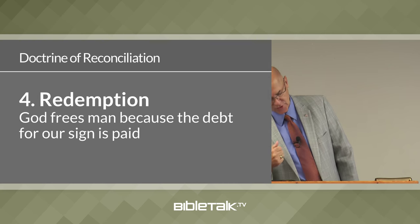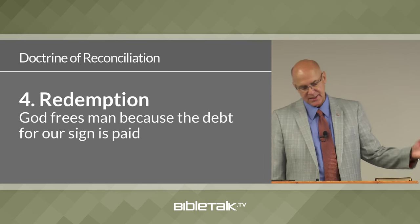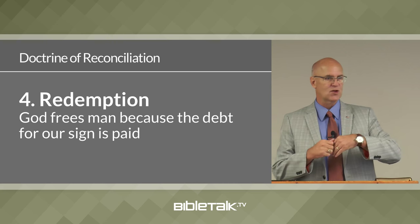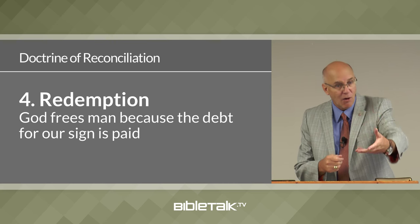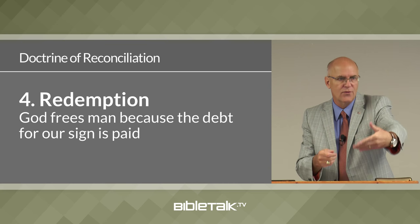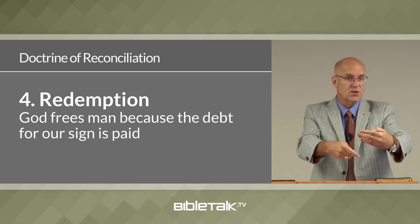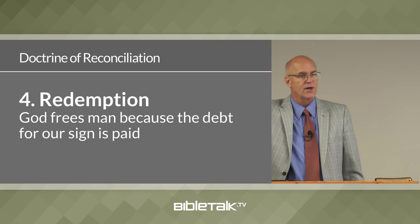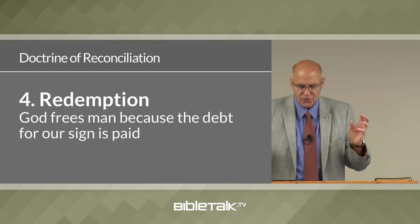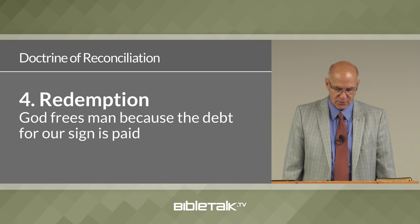The third sub-doctrine is the doctrine of atonement, which teaches that God pays the moral debt that man owes for sin through the death of Christ on the cross. The doctrine of redemption explains that God frees man because the debt for sin is paid. Atonement is the how — Jesus pays that moral debt — and redemption is the result: man is free, the debt's been paid.